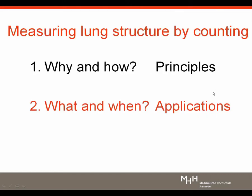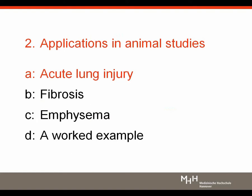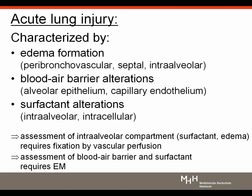That summarizes the basics, which we can now apply to specific models in experimental lung research. I picked three examples: the first is acute lung injury, the second is fibrosis, and finally emphysema — which I will also illustrate with a worked example. Let's start with acute lung injury.